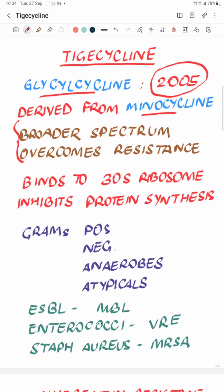The tetracyclines have an amazing spectrum of action — against gram positives, gram negatives, anaerobes, and atypicals. But the major problem had been the resistance which bugs have developed over the years, mainly due to changes in the binding site in the ribosome and development of efflux pumps. TG-cycline has been designed to overcome this resistance and offer the benefit of a very tolerable, safe antibiotic with a wide spectrum of action.